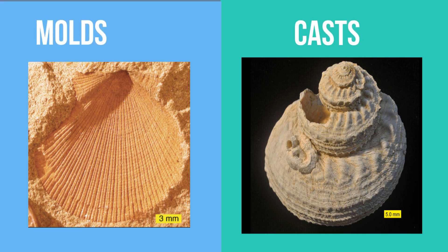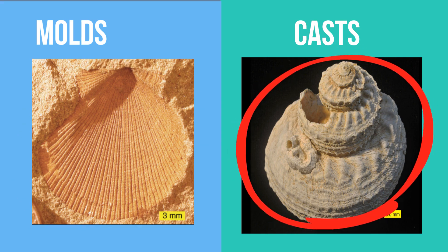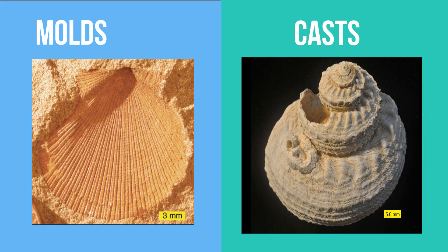Molds and casts. Sometimes an organism will die and hard parts of the organism, like a bone or a tooth, will make an impression. This impression creates a mold that hardens and you get a permanent record. On the other hand, this impression or mold can fill up and will create a cast, which is a copy of the impression. Take a look at these molds and casts to help you see the difference between the mold and a cast.